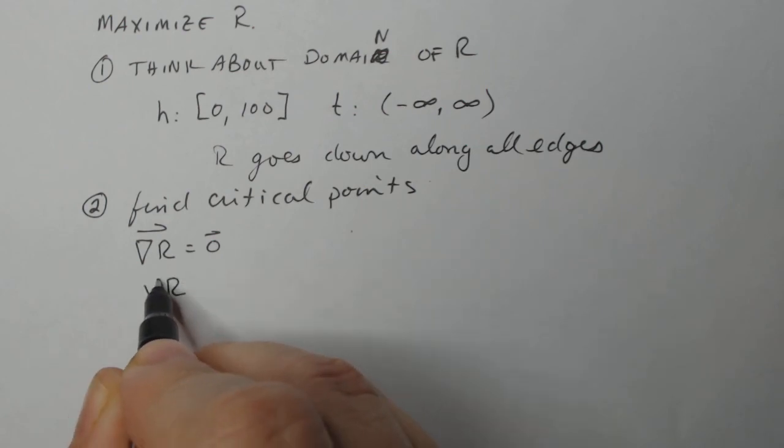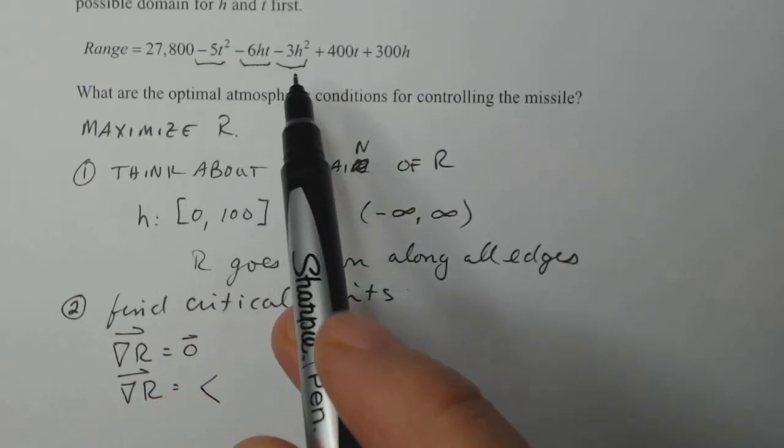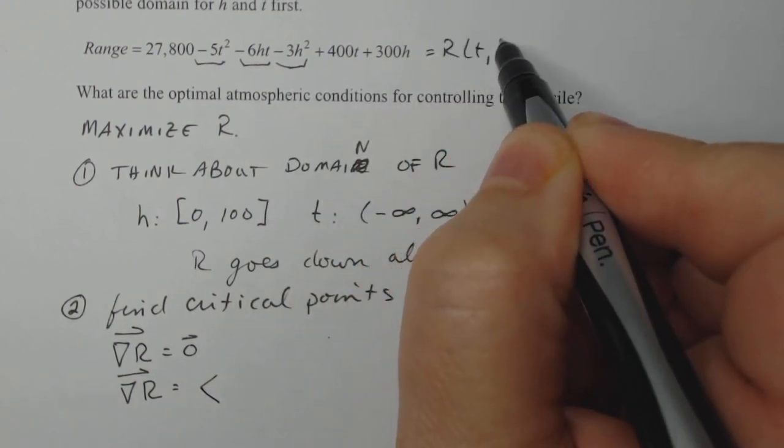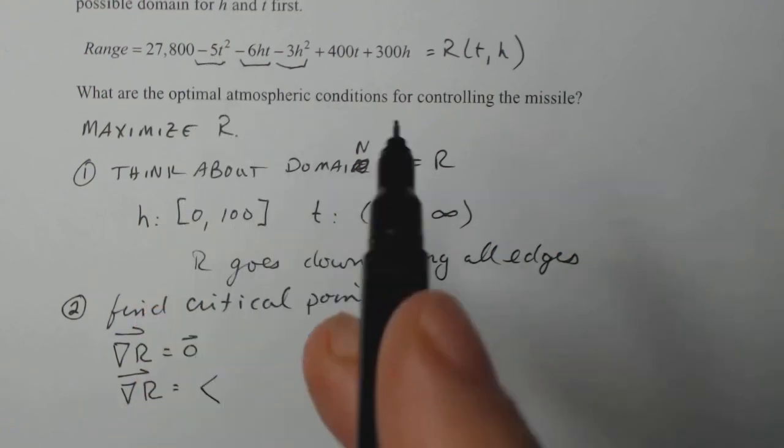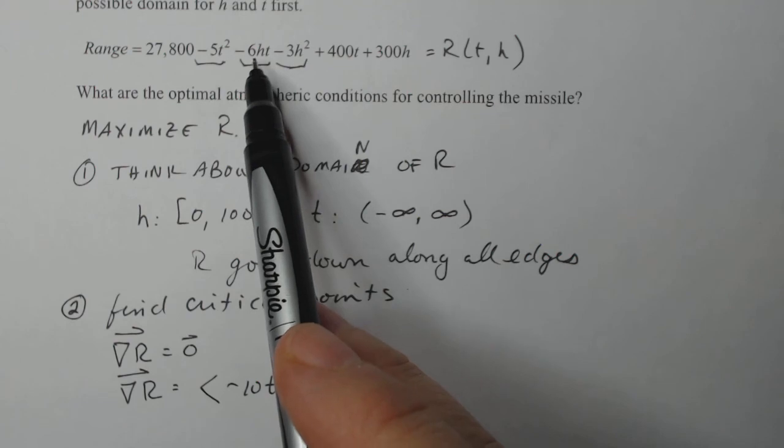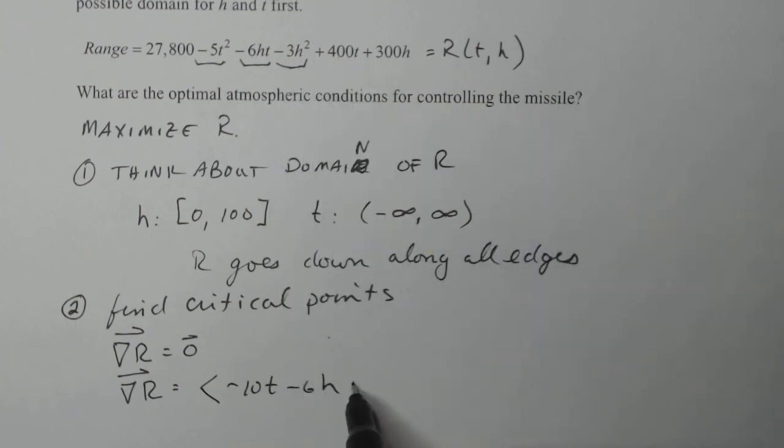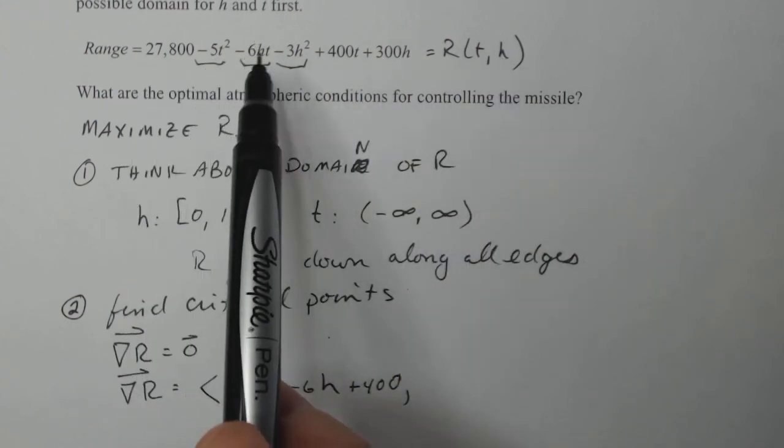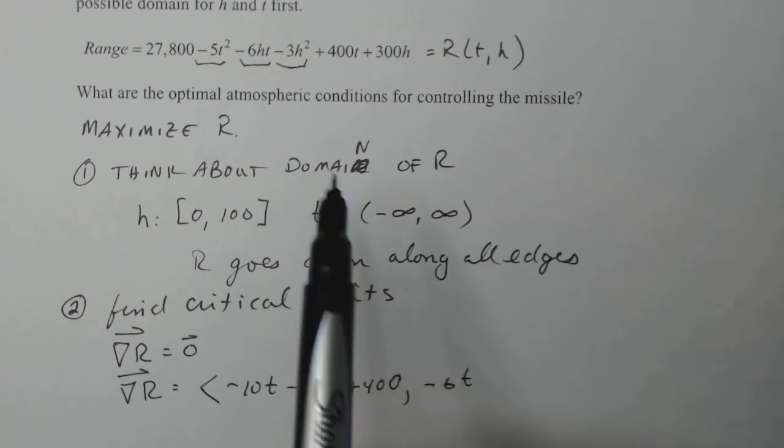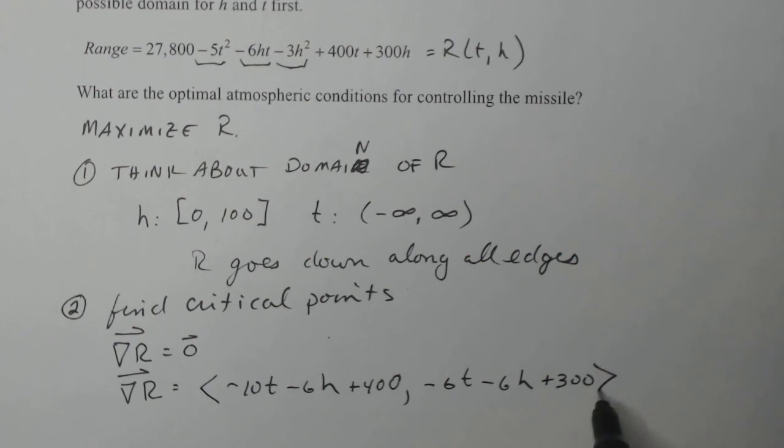I find the critical points and those occur when the gradient of my range is equal to the zero vector. So let's calculate the gradient of R. So if I take a look at my function here, I take the derivative of this guy with respect to T first. So I'm going to say this is equal to R of TH. That'll clear up some confusion. So the derivative with respect to T, that's going to go to zero. That's going to be minus 10T. This guy is going to be a minus 6H, this guy zero, that guy's 400 and that guy's zero. All right, let's go to the next derivative. So the derivative with respect to H now, zero, that's zero and that's minus 6T. That's going to be minus 6H and that's zero and that will be 300. So there's my gradient.